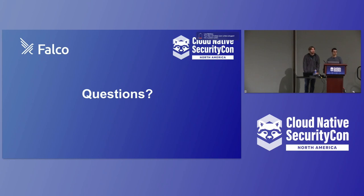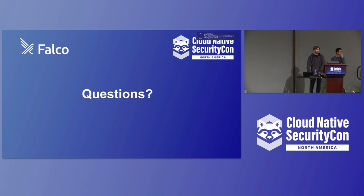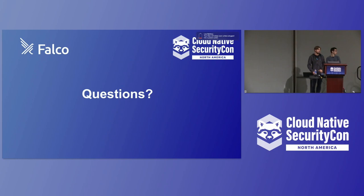Audience question: How is Falco deployed? If I want to use Falco in my cluster, how would I do that? Answer: There are Helm charts officially provided by the Falco Security Organization. When using Kubernetes, Falco runs as containers — the Helm charts spawn pods on each node as a DaemonSet. You can also deploy Falco directly on a node using our packages.